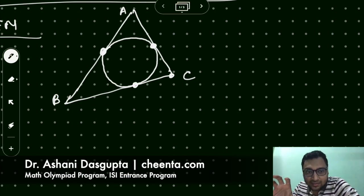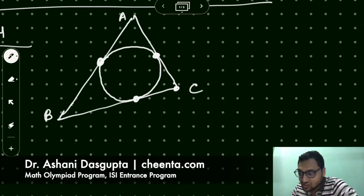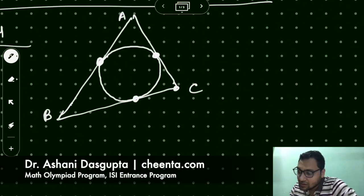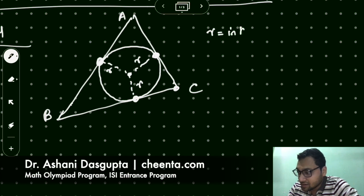So you just have a circle like this to which the sides of the triangle ABC are tangent to, and we have the radius of this particular circle as small r. So we don't know the radius. So r is the in radius of this triangle.